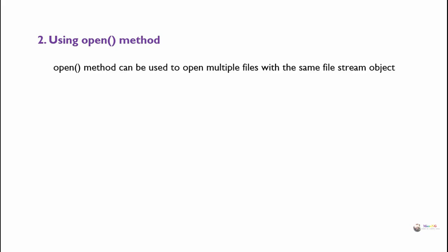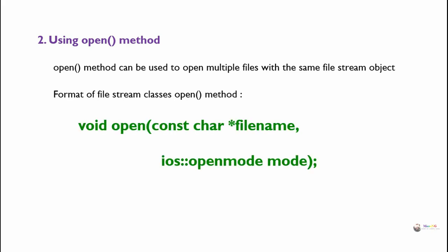The second method is using the open method. The open method can be used to open multiple files with the same file stream object. The format of the file stream class's open method: void open() takes two parameters — the first is the name of the file and the second is the file mode.